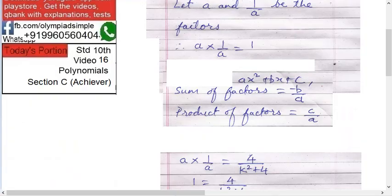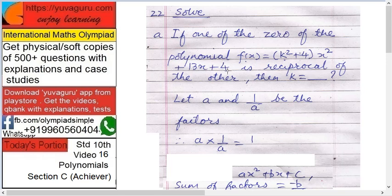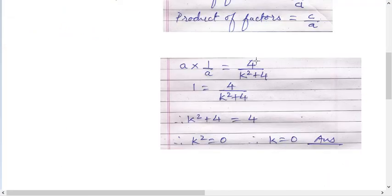But a into 1 upon a means here. Suppose if an expression polynomial or quadratic equation is ax² + bx + c, then the sum of the factors is -b/a and product of the factors is c/a means last digit upon first digit. In this problem we are concerned with the product because each one is reciprocal. So c upon a means last digit upon first digit. In our case, last digit is 4 and first digit is k² + 4. So product of the factors means a into 1 upon a equals to 4/(k² + 4). But a into 1 upon a is 1.